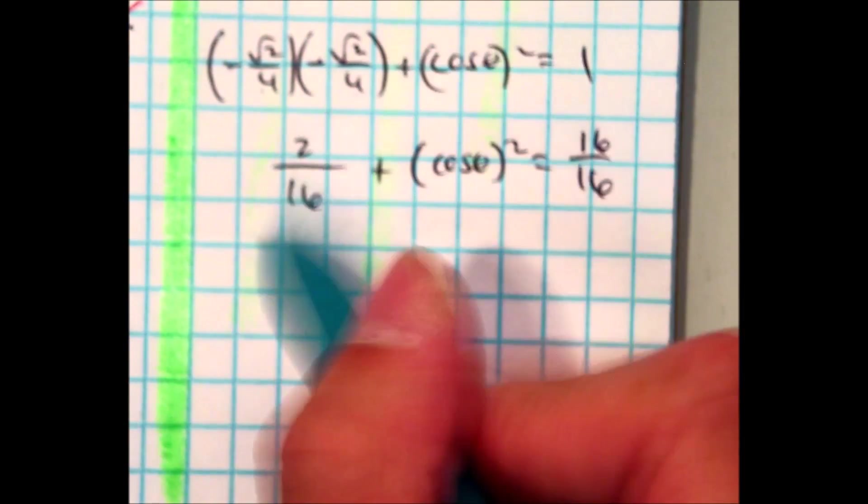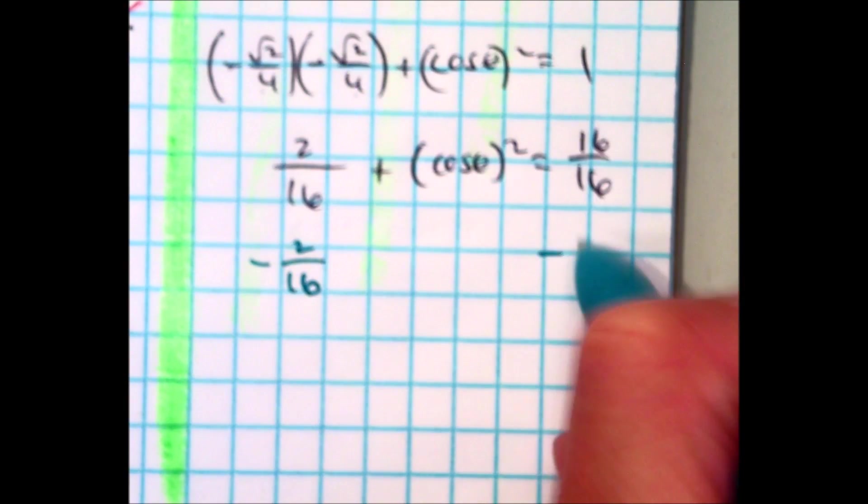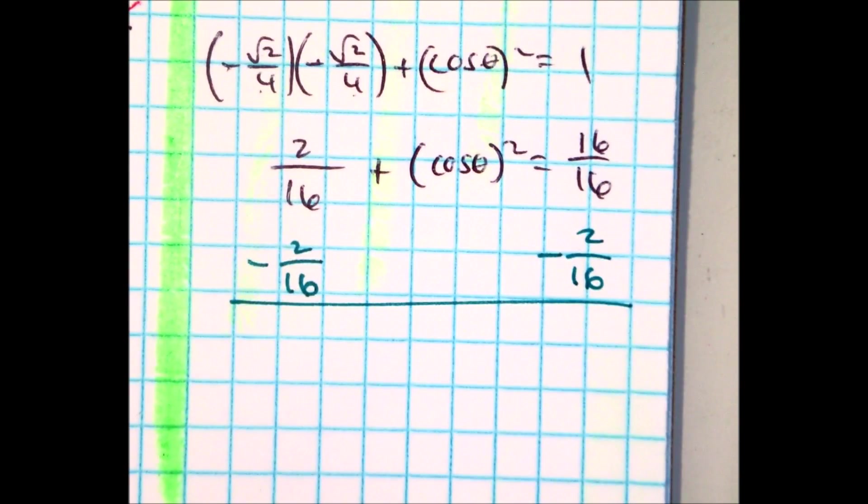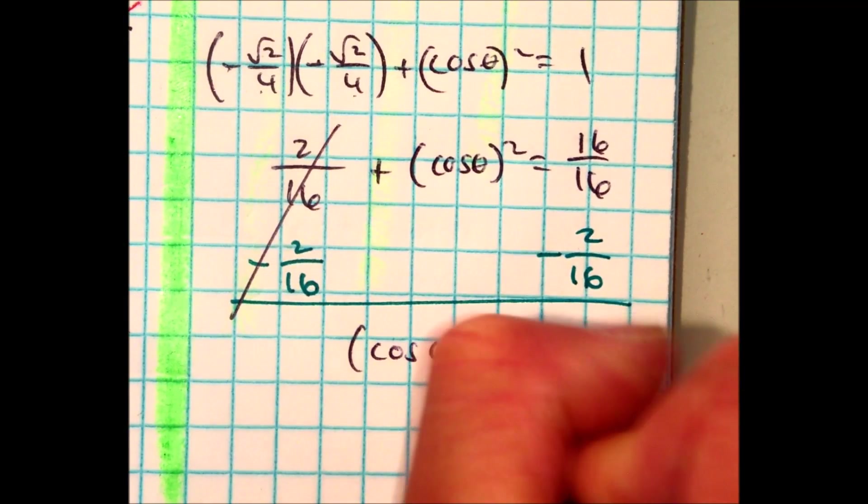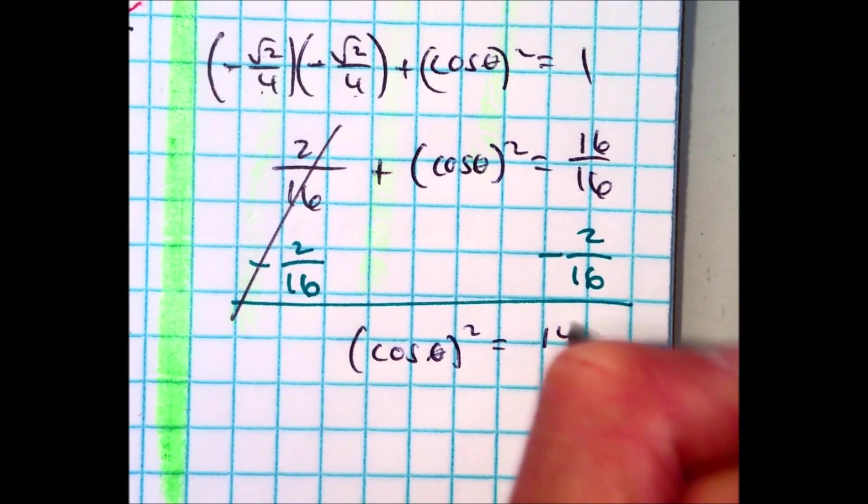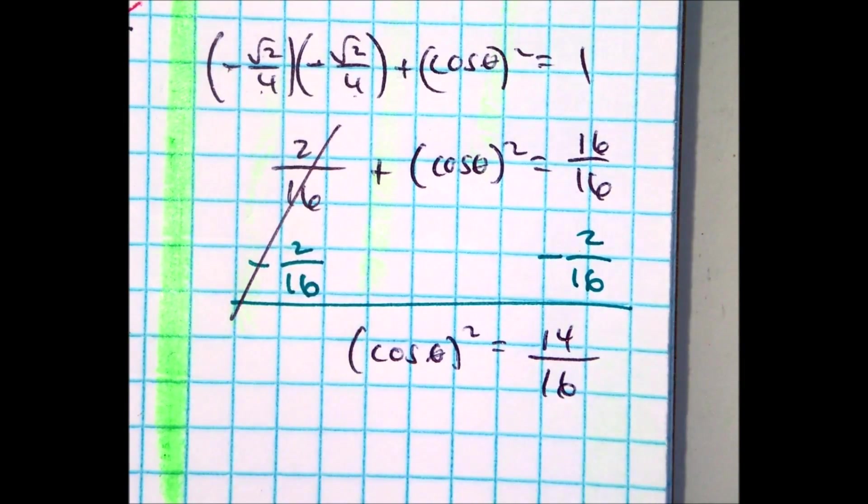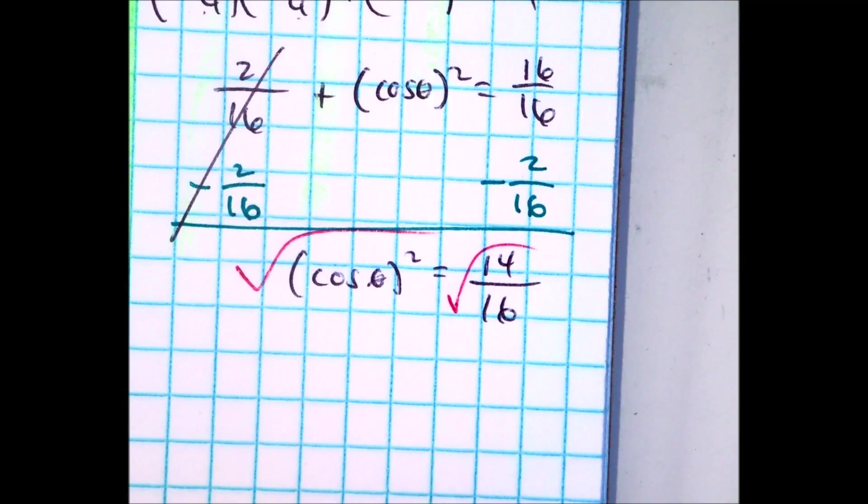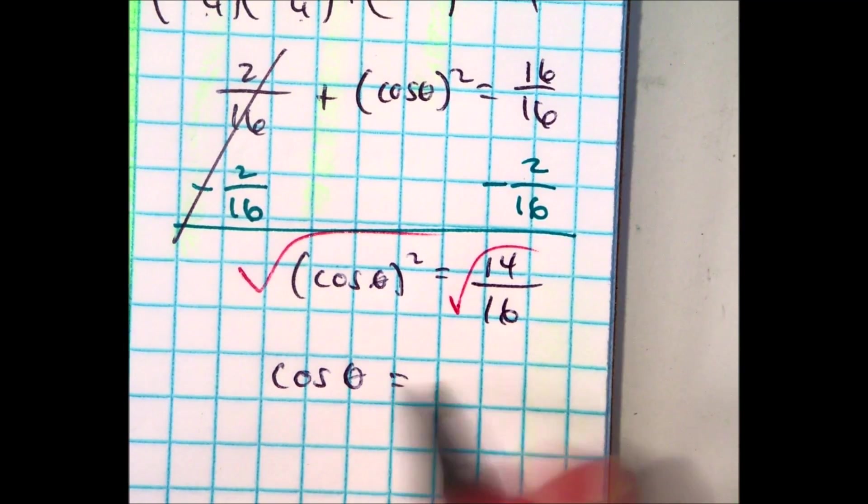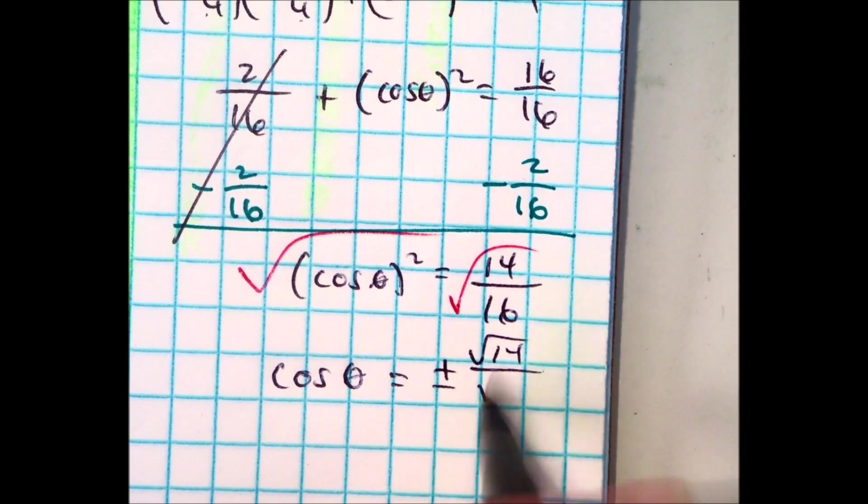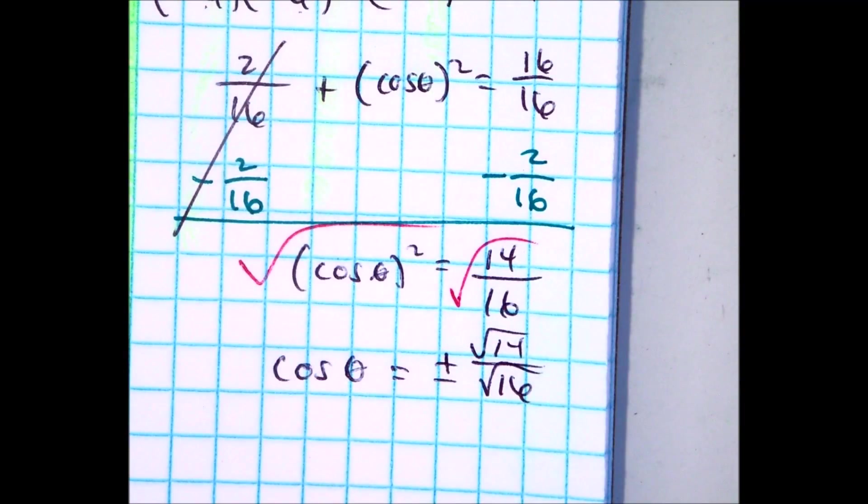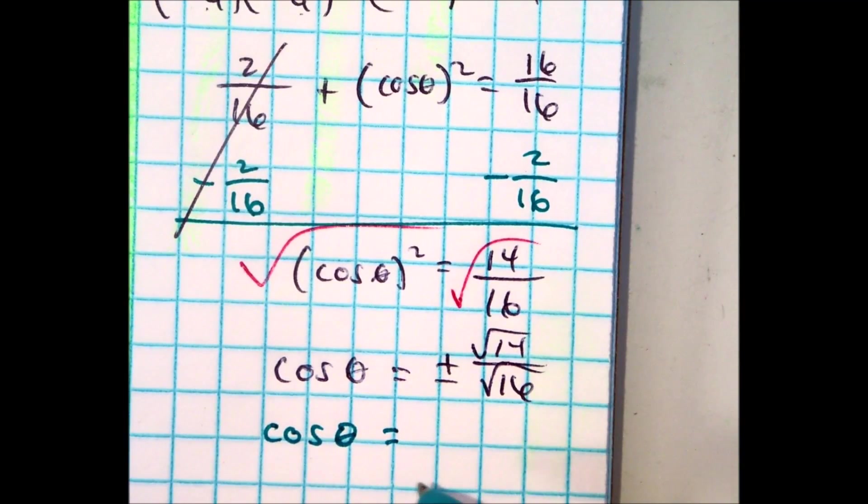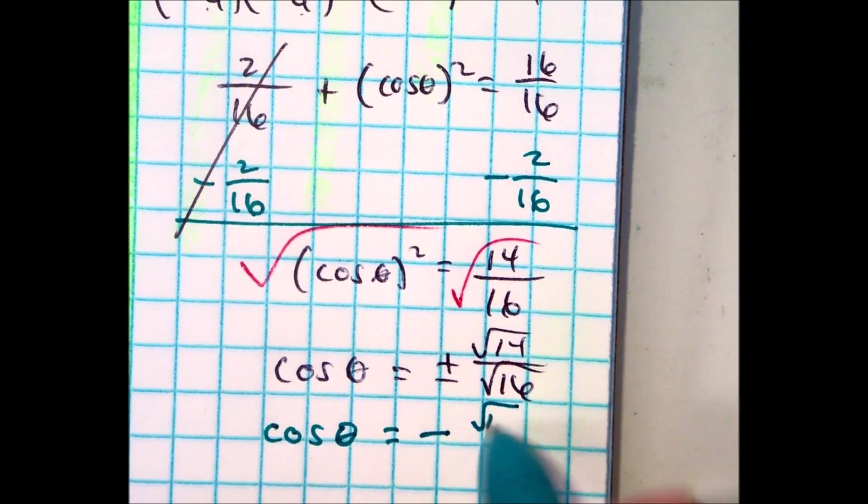What do you want to do next? So these will cancel. We're left with cosine of theta squared equals what? Don't simplify. I know you're tempted to. Square root. Cosine of theta equals plus or minus the square root of 14 over the square root of 16. Is cosine positive or negative in quadrant 3? It's negative. The square root of 14 over 4.